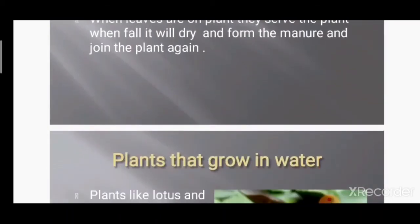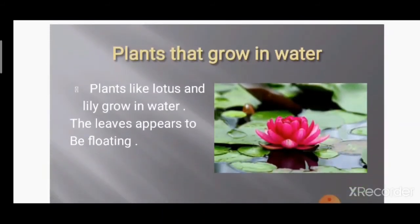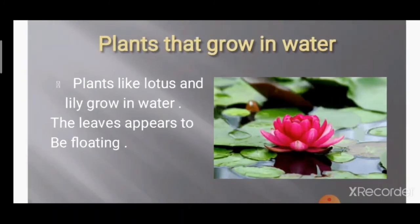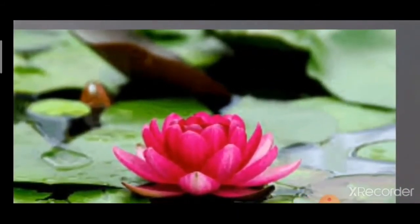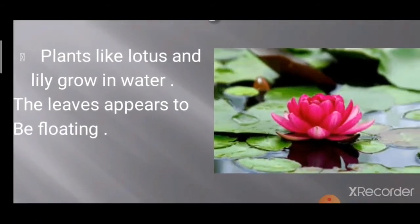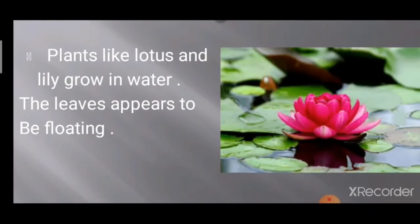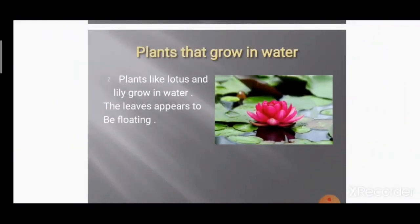Some plants grow in water. You have seen plants growing above the water near a lake or pond. One example is the lotus plant — lotus grows near your pond. Here is the diagram for the lotus plant — you can see the leaves are floating on the water. Plants like lotus and lily grow in water, and their leaves appear to be floating.